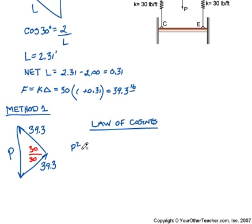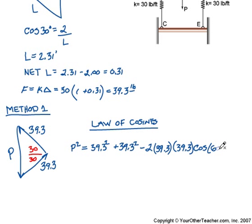So we have P squared is equal to the two other sides squared, so 39.3 squared plus 39.3 squared minus two times the two sides, 39.3 also times 39.3, times the cosine of the angle between those two, which in this case is 30 plus 30 or 60 degrees.